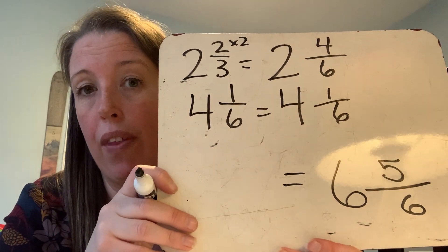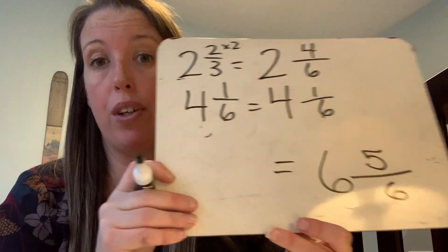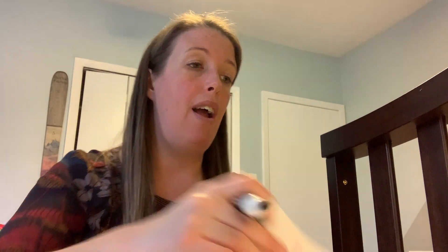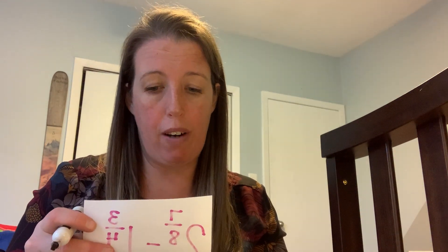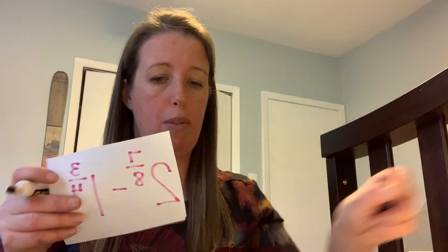Hopefully you got that also. If you didn't, hopefully you see where your mistake was. All right, let's shift gears and move into subtracting. It is the same first steps: you're going to look for a common denominator and then make equivalent fractions. Once you do, instead of adding them, you're going to subtract them.